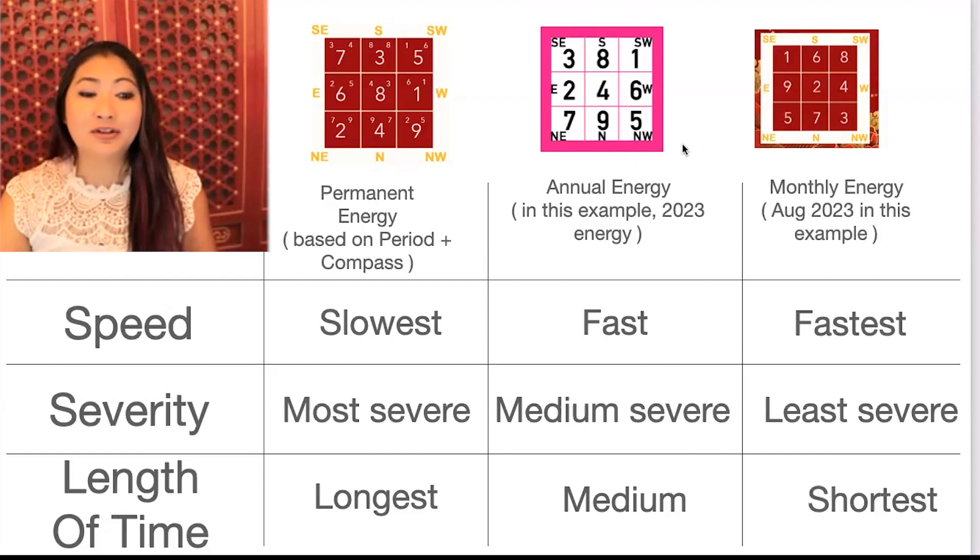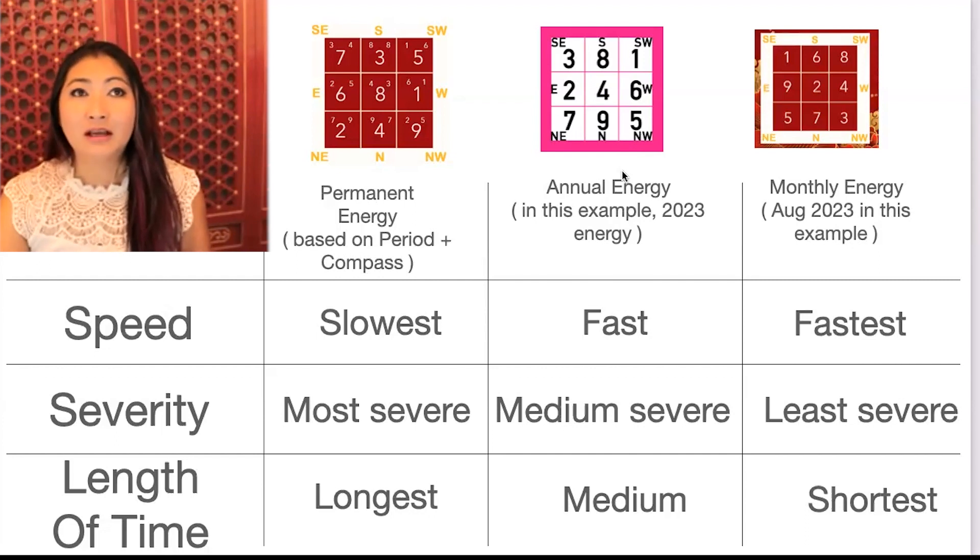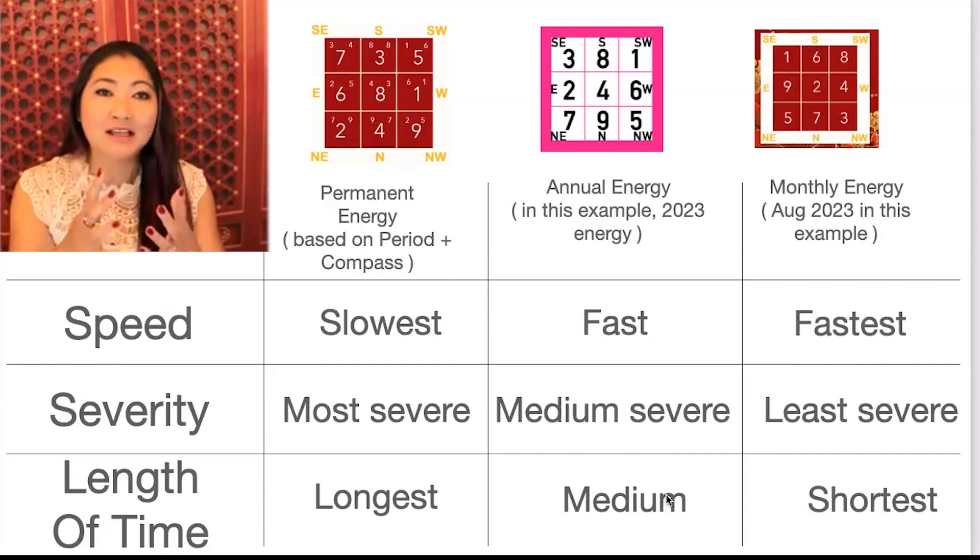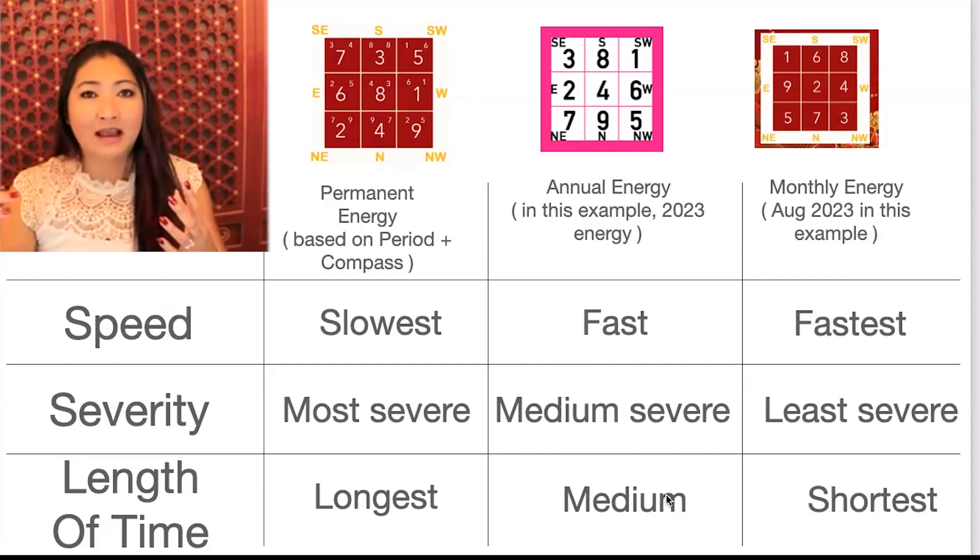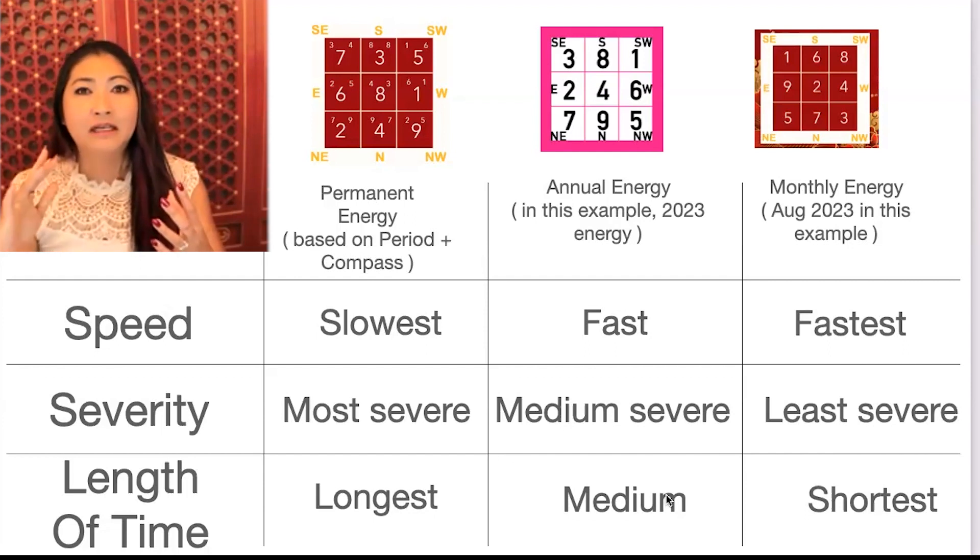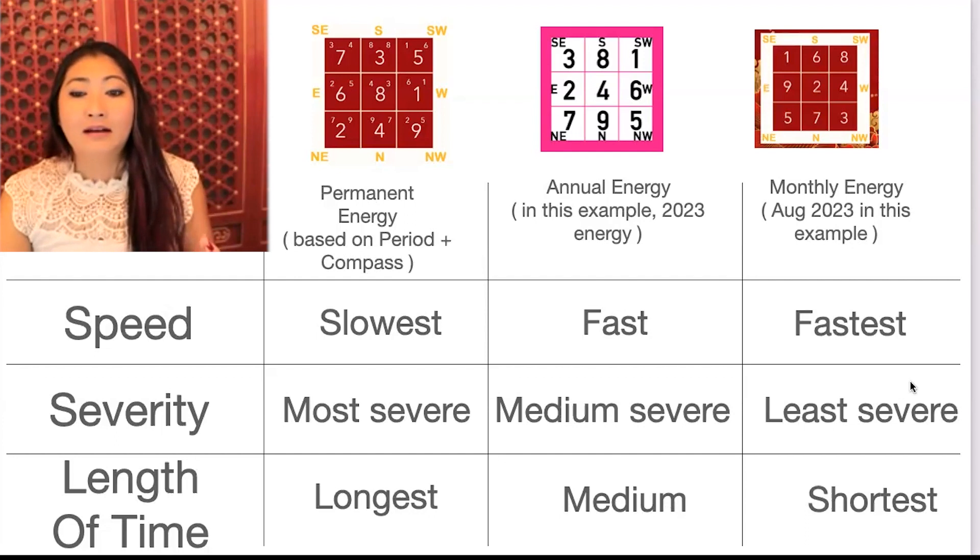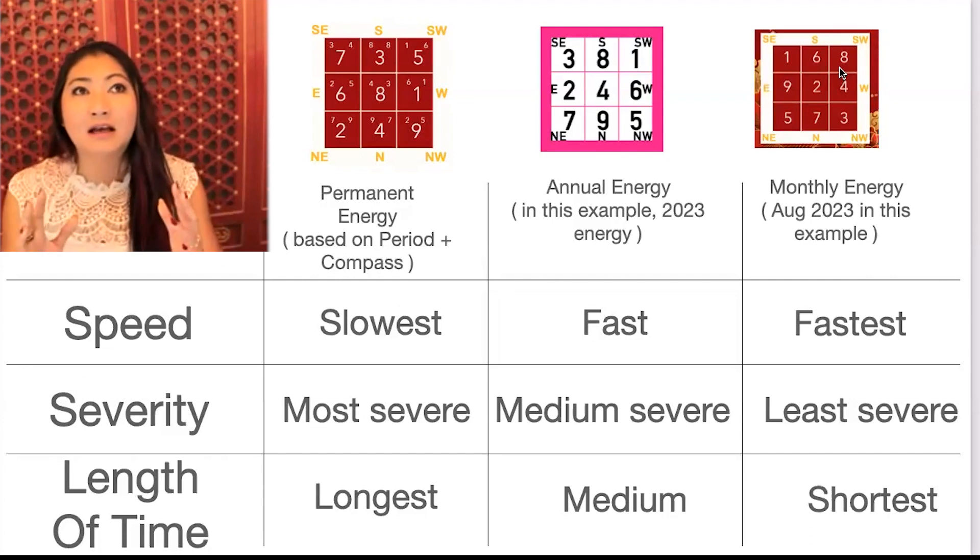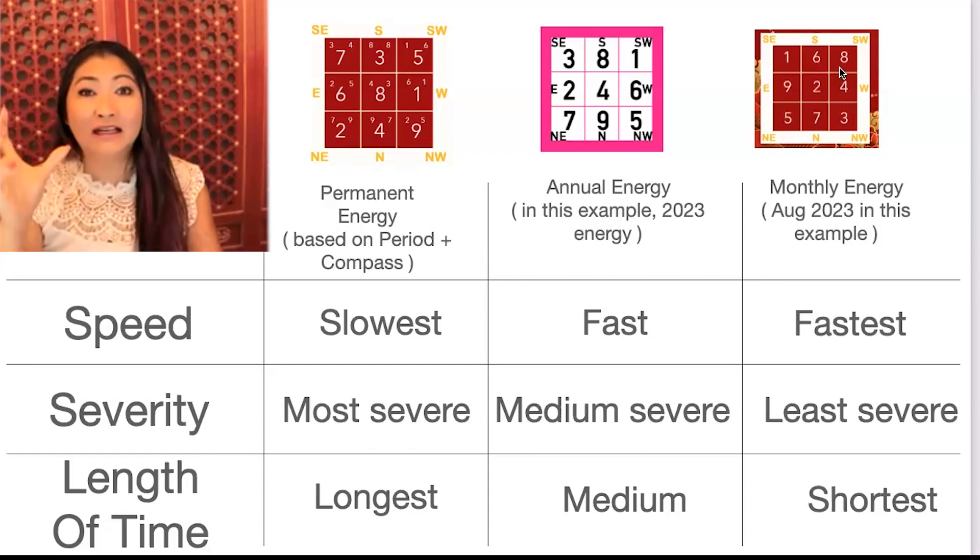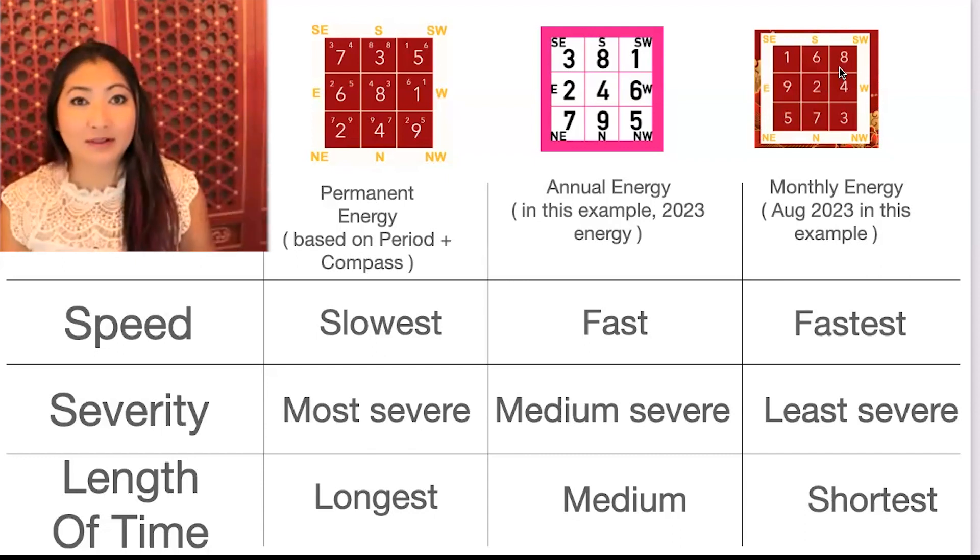If it is illness that is triggered by the annual energy, you might find yourself more sickly during that year and then maybe a few months after that. Plus or minus two, three months. And if it is a monthly energy, if you got sick for a certain month, then you might just get sick for about five, six weeks. So like maybe a week before and after that month, when that illness energy hits, let's say your bedroom for that month.